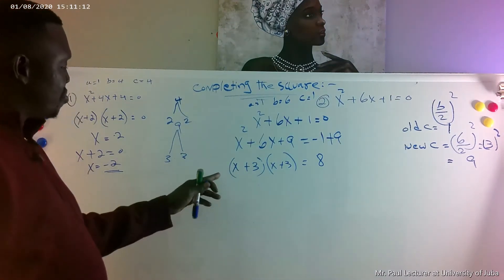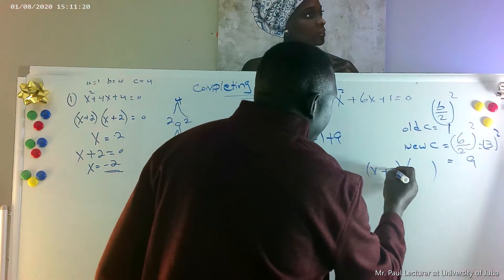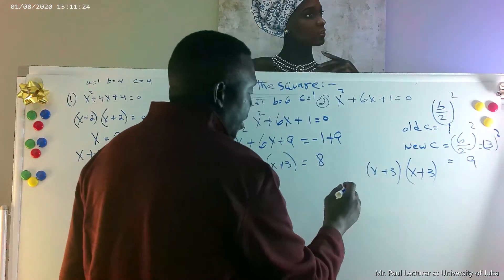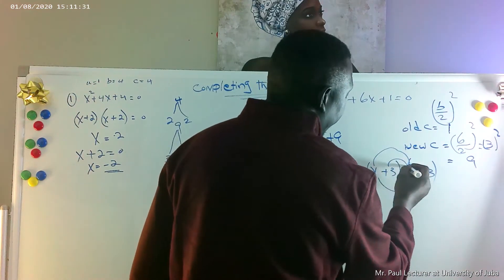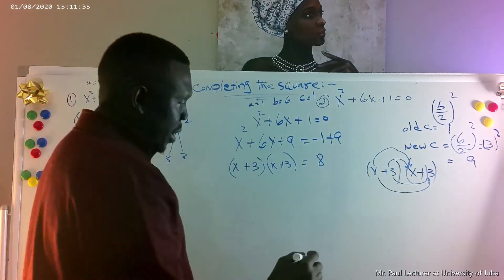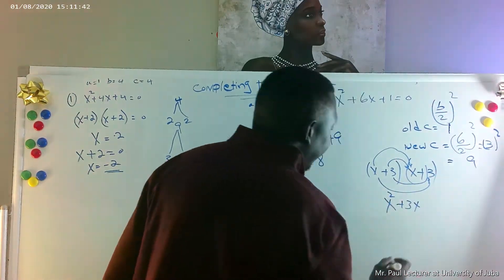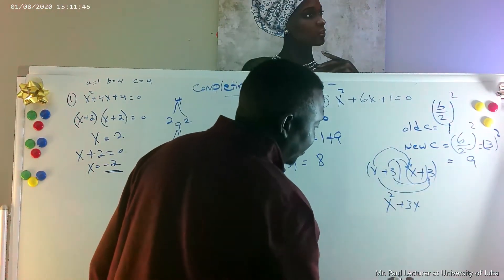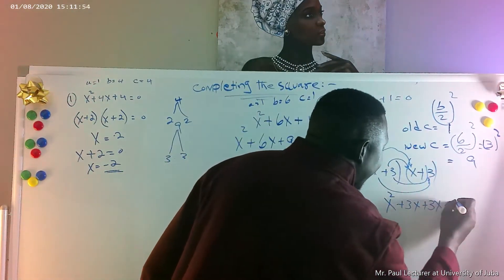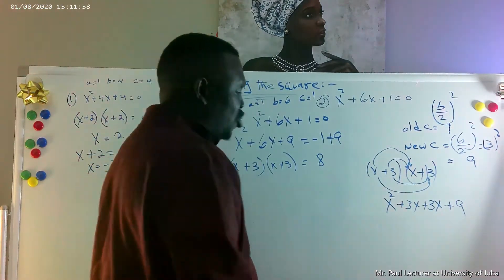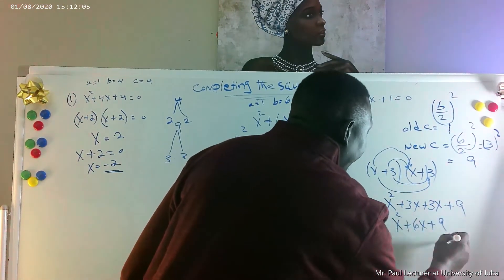We can verify this by using FOIL on (x plus 3)(x plus 3): x times x is x squared, x times 3 is 3x, 3 times x is 3x, and 3 times 3 is 9. Adding the like terms gives x squared plus 6x plus 9. This confirms it is a perfect square.